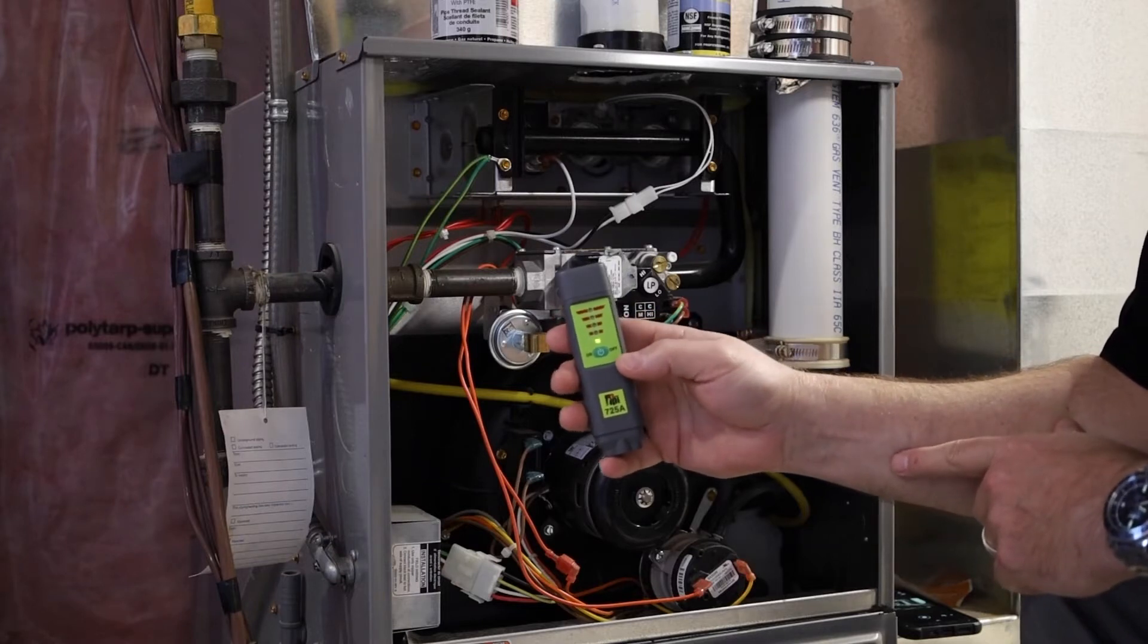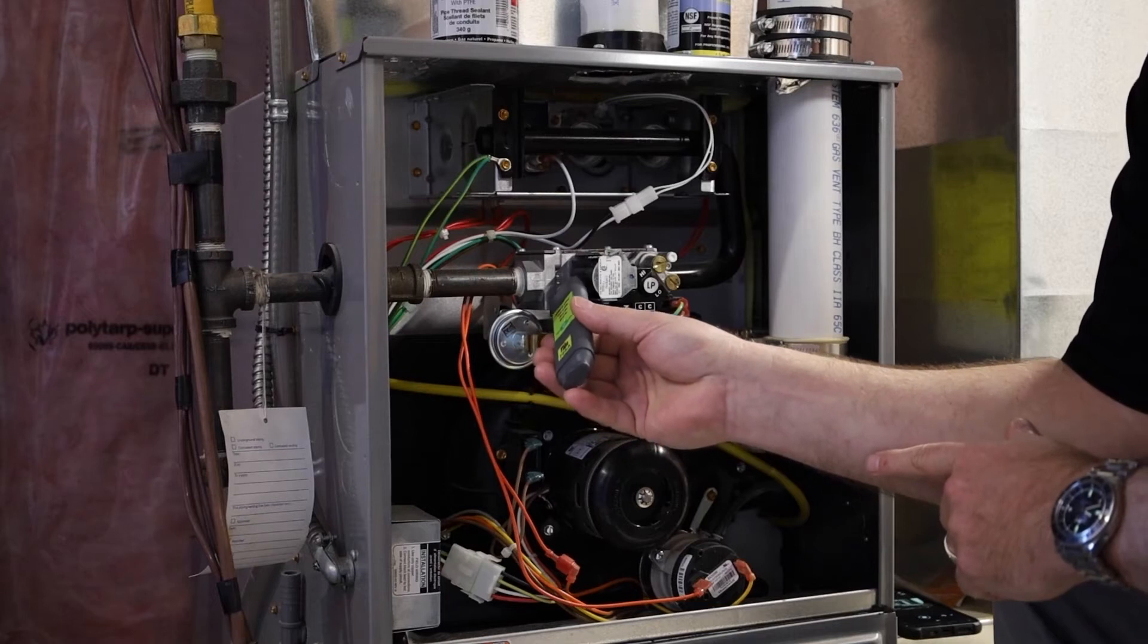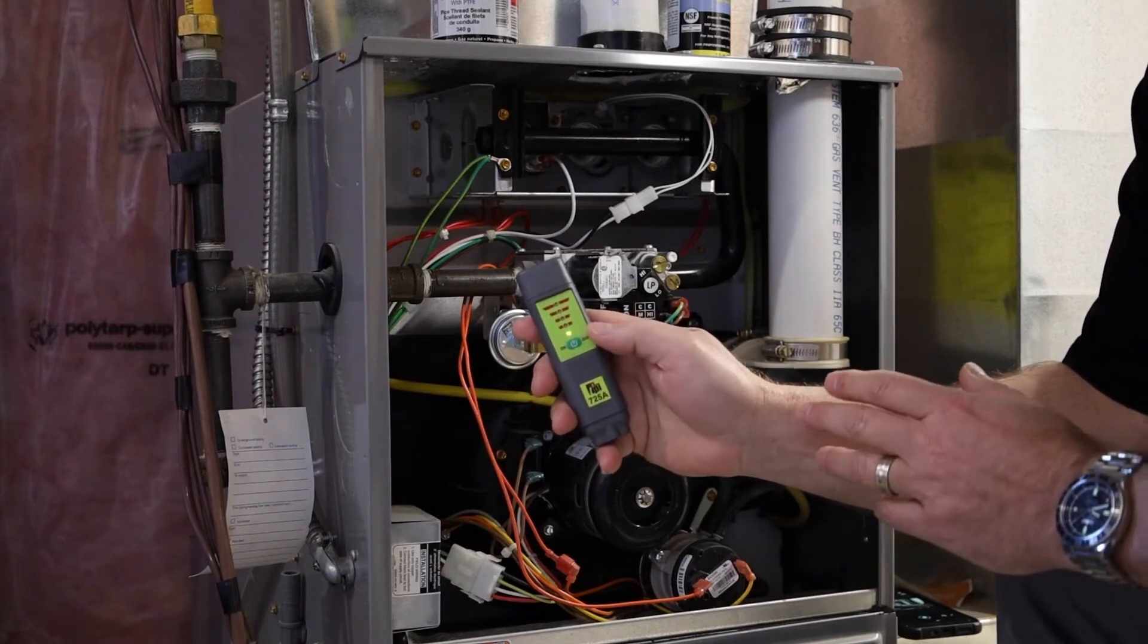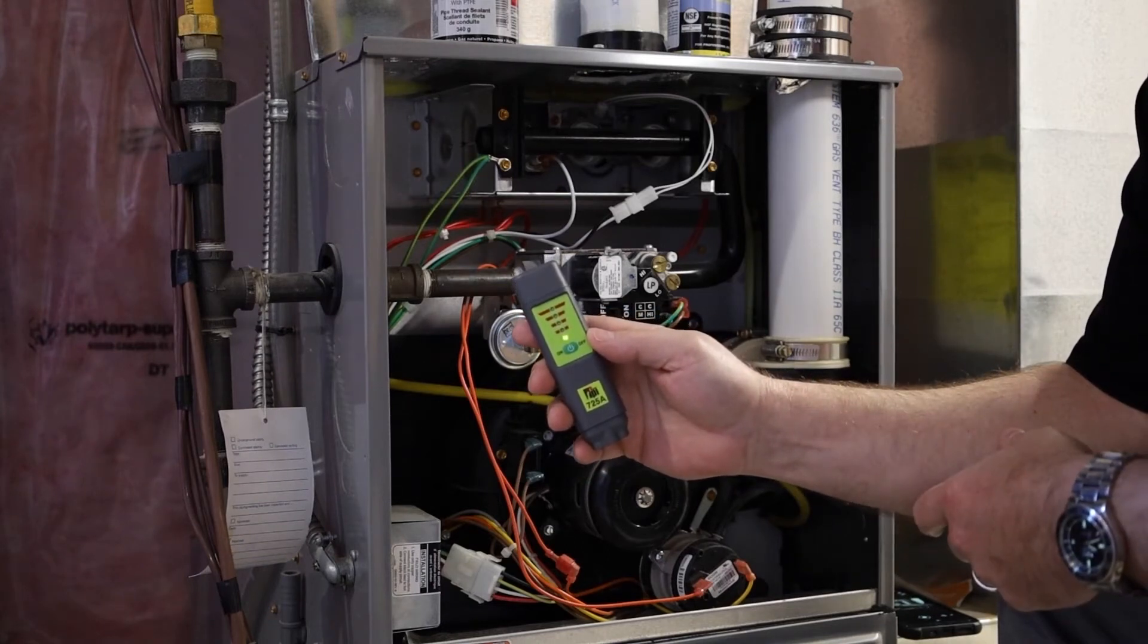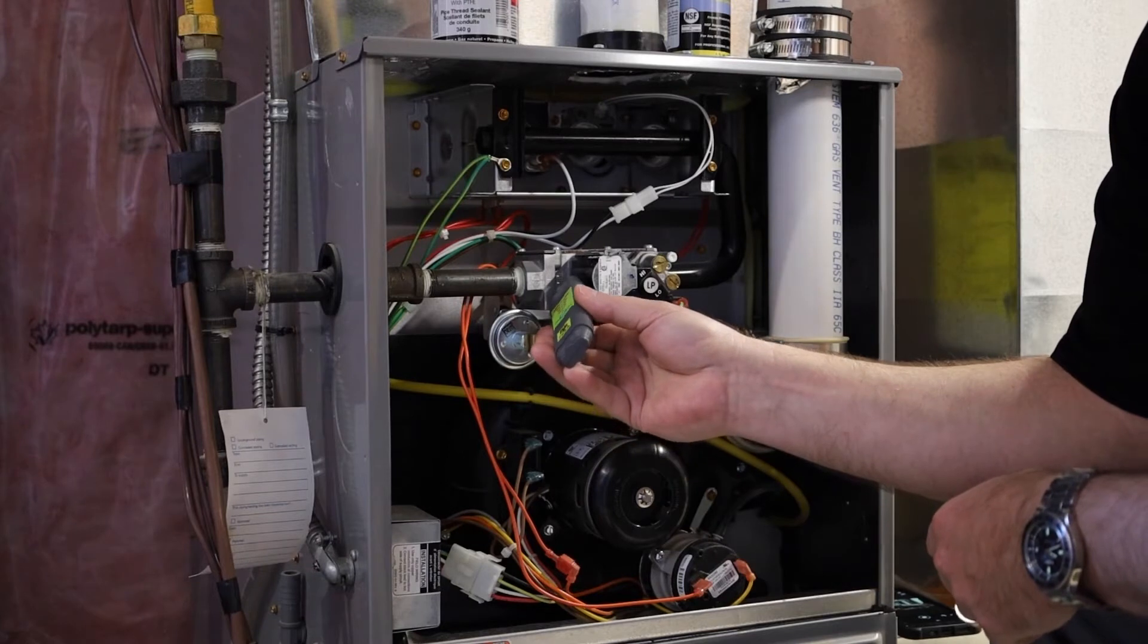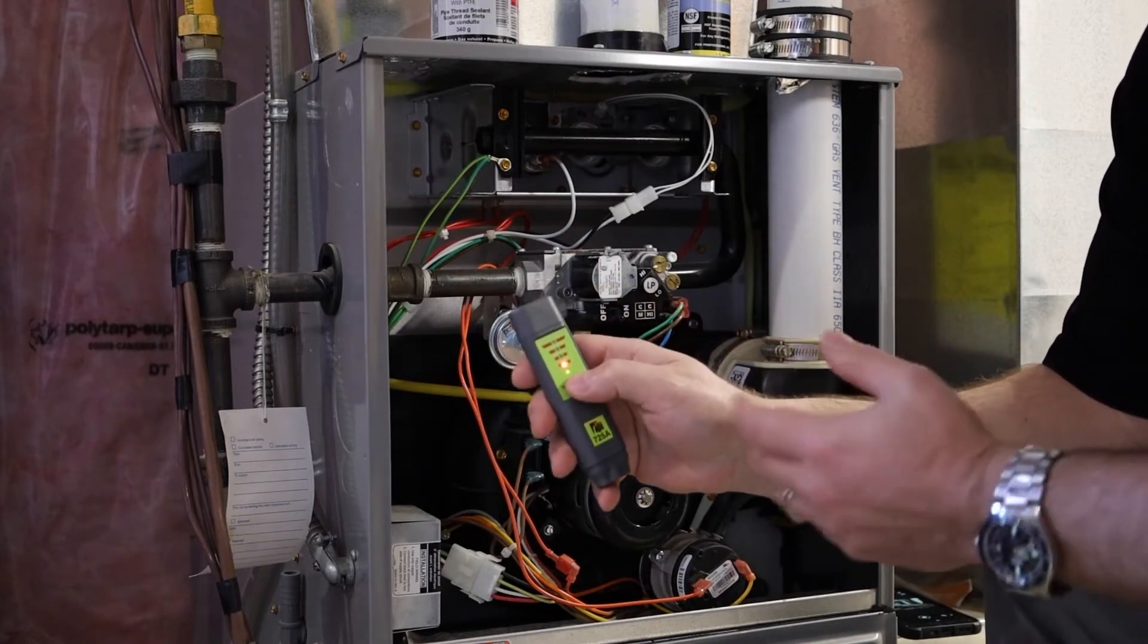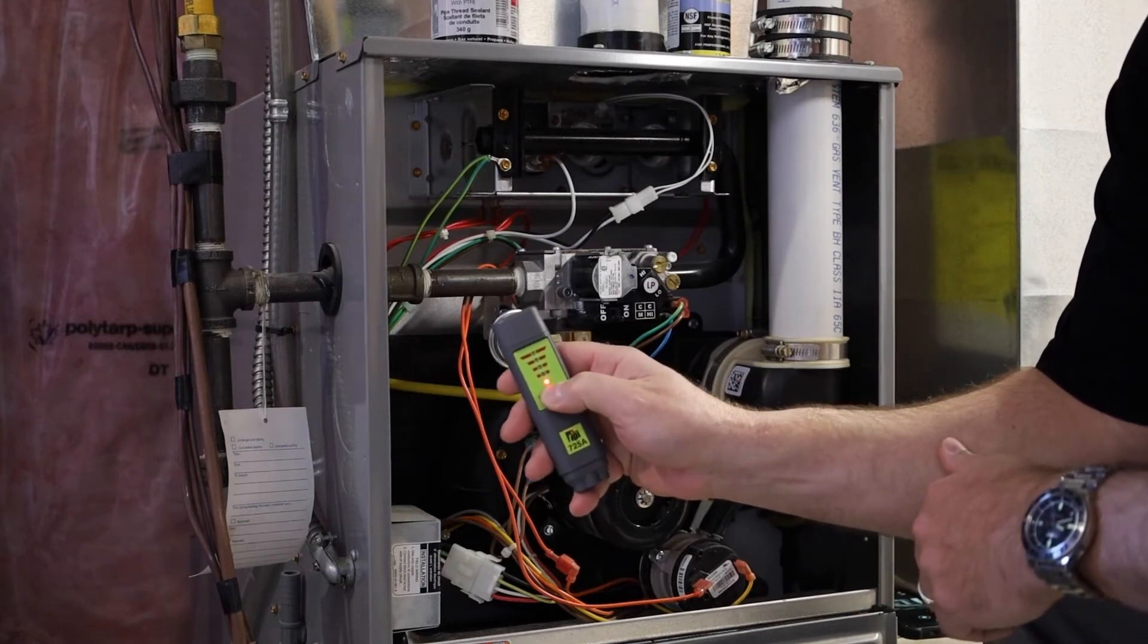Now with this leak detector, when you detect a leak you can press a button and zero it out. So now it is only going to detect higher combustible gases, a higher sample of parts per million. Again go over to my suspected leak and there it goes. Obviously the higher it is, that's where the source of the leak is going to be.